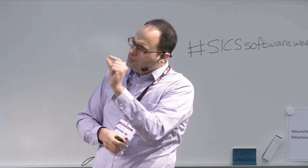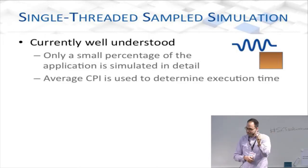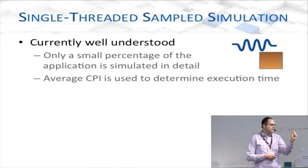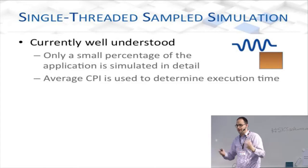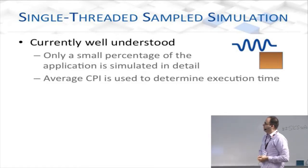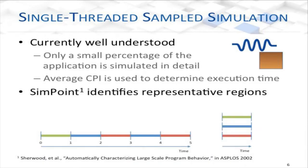Single-threaded sampling is understood today. You simulate a very small percentage of the actual application — you select the representative regions in advance and simulate only those parts, then extrapolate the entire application performance. SimPoint is one methodology that allows you to do this. Basically, you have an application that runs, say, five seconds; you chop it up into five parts, identify that red regions are very similar, blue regions are very similar, and the green region stands alone — so now you only need to simulate three regions instead of five. In reality, instead of three-fifths, you'd only simulate one percent or half a percent of the application, and still get a very good understanding of how it performs on a particular microarchitecture.